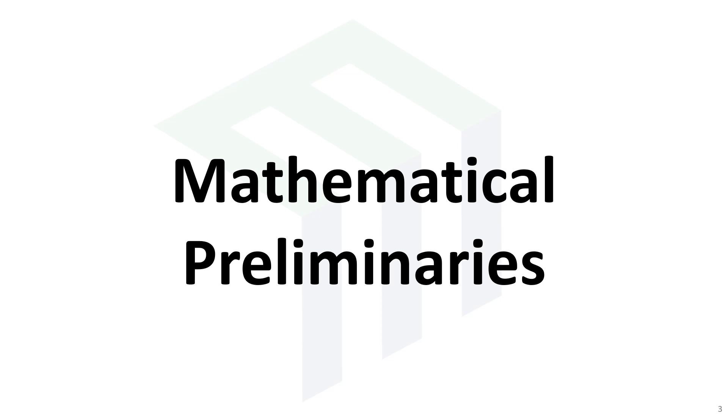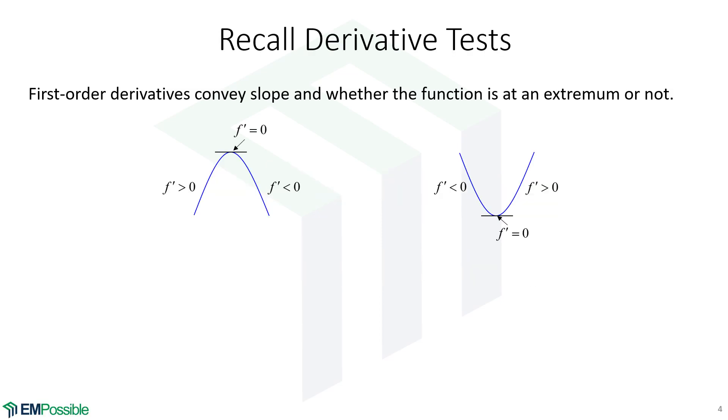Mathematical preliminaries. It turns out we can use the derivatives of functions to identify where they have extrema and whether that extrema is a maximum or a minimum. First, we have the first derivative test. So we're looking at the derivative of a function. When the derivative is positive, we know that the function is increasing. When the derivative is negative, we know that it is decreasing.